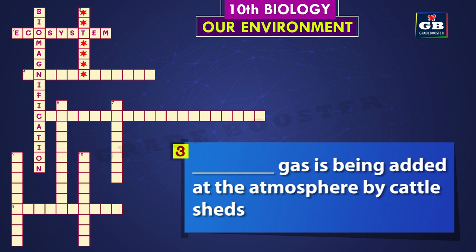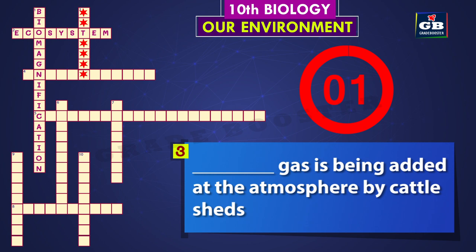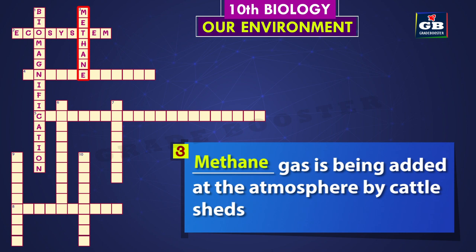Three down: dash gas is being added to the atmosphere by cattle sheds. The right answer is methane. Methane gas is being added to the atmosphere by cattle sheds.